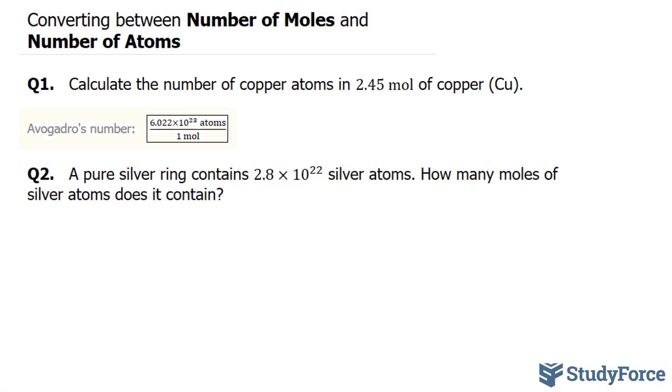To do this, we'll need to use Avogadro's number, which is shown right here. Think of it as a conversion ratio. So for every 6.022 times 10 to the power of 23 atoms, we have 1 mole. We can flip this quotient where the moles are at the top and the atoms are at the bottom. It depends on what you're doing.